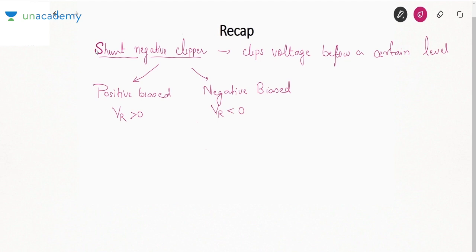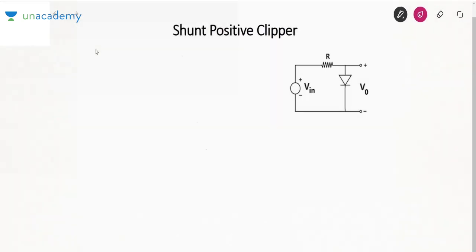In this lecture we will look at the shunt positive clipper, which clips the voltage above a certain level — earlier it was clipping below, now it will clip above. It can also be positive biased or negative biased. This is the circuit of the shunt positive clipper; if you compare it to the last lecture's circuit, the diode polarity has been reversed.